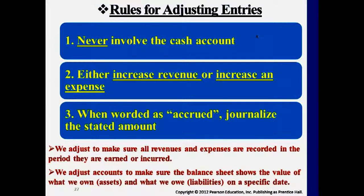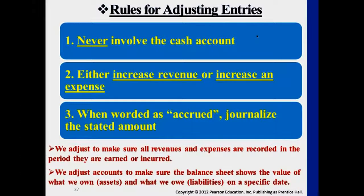Another tip for this week's homework: if you see the term 'accrued,' that means accumulated, and it will usually fall under one of the adjusting entries. Accrued revenue or accrued expenses — the salary example falls under accrued expenses. The employee worked for you for two weeks, you haven't paid a check yet; you accrued, you accumulated, expenses related to the salary payment.